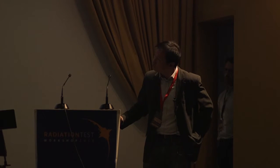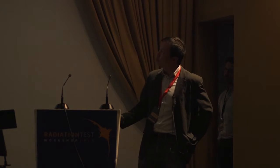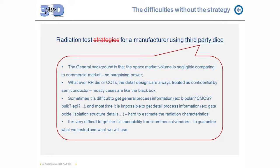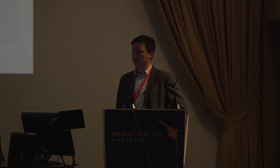Sometimes it is very difficult to get even general process information — for example, whether it is bipolar or CMOS, bulk or epitaxy. Most of the time it is impossible to get detailed process information such as gate oxide or isolation structure details, which means it is very hard to estimate the radiation characteristics. At the end, it is also very difficult to get full traceability, which is a critical point in our space products.